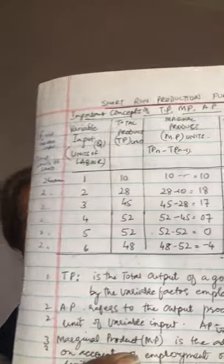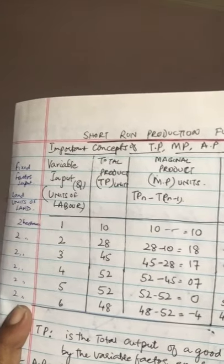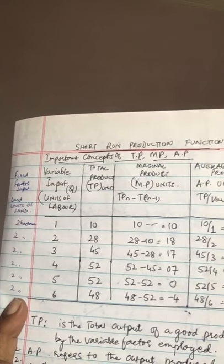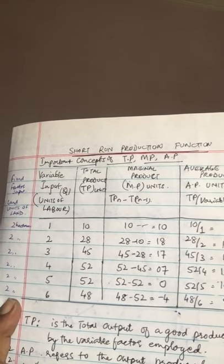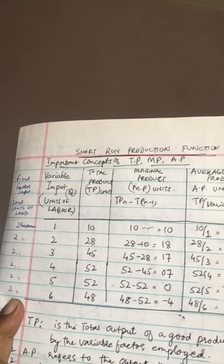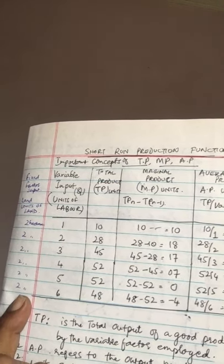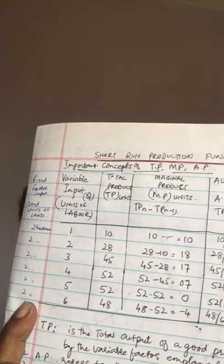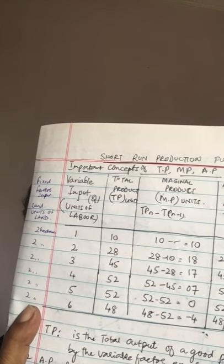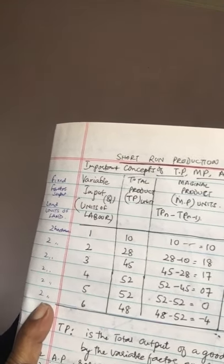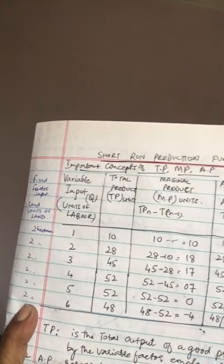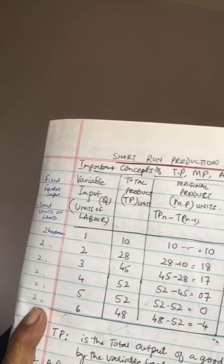For example, keeping the fixed factor as land at two hectares, the factor ratio changes as output changes. Initially it is two hectares of land to one labor, then two hectares to two labor, then two hectares to three labor — that's how the factor ratio changes. But in the long run production function, the factor ratio does not change with a change in the volume of output.